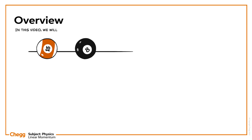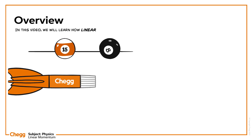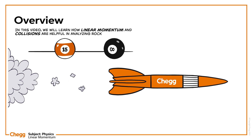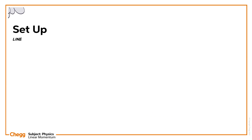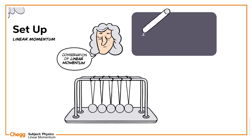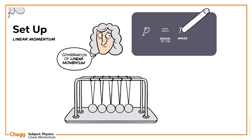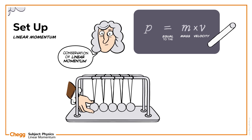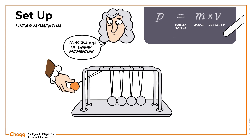In this video, we will learn how linear momentum and collisions are helpful in analyzing rocket propulsion. Let's begin with understanding what linear momentum is. Linear momentum, P, of an object is equal to the mass, m, times the velocity, v, of the object. Therefore, P equals m times v.